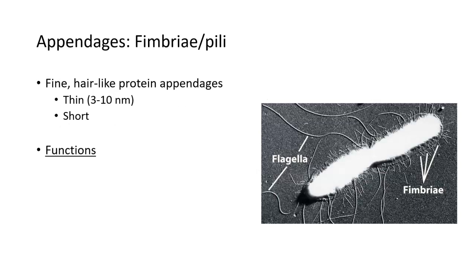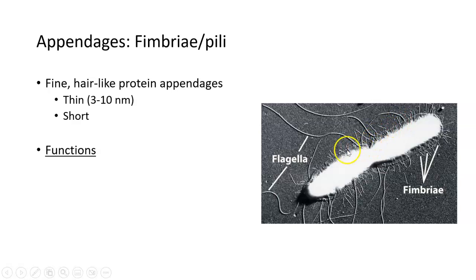We're going to start by talking about an appendage called fimbria or pili, and these two words can be used interchangeably. Pili are fine hair-like protein appendages that extend outward from the cell wall into the environment. You can actually see fimbria on this bacterial cell here — there are many fimbria all along the outer edge, and they're quite thin and short in length. Generally, the function of pili is to attach bacteria to solid surfaces and adhere them onto whatever media they're growing on.